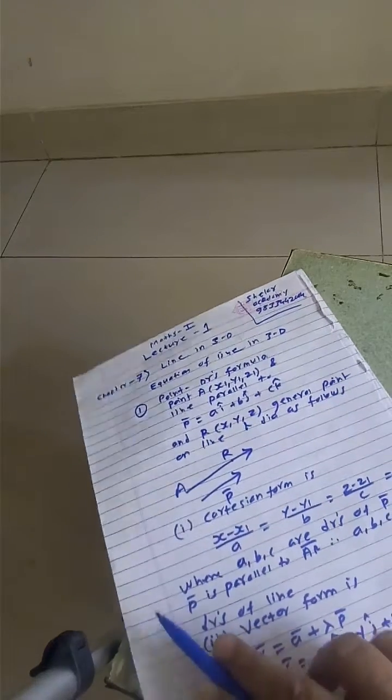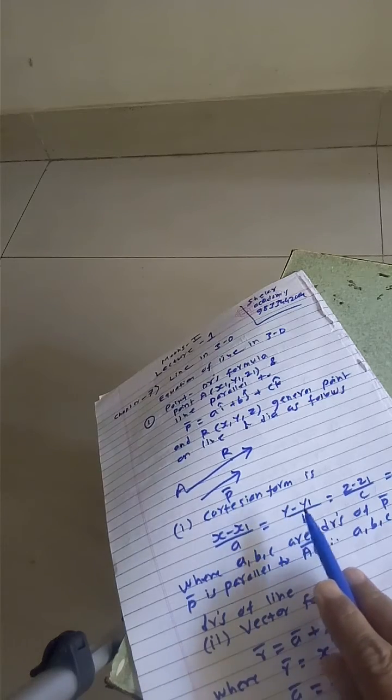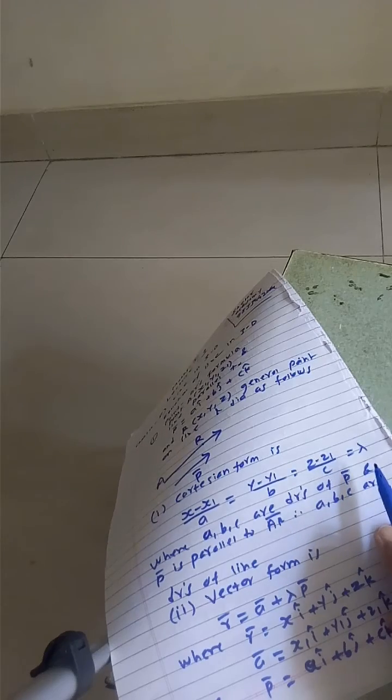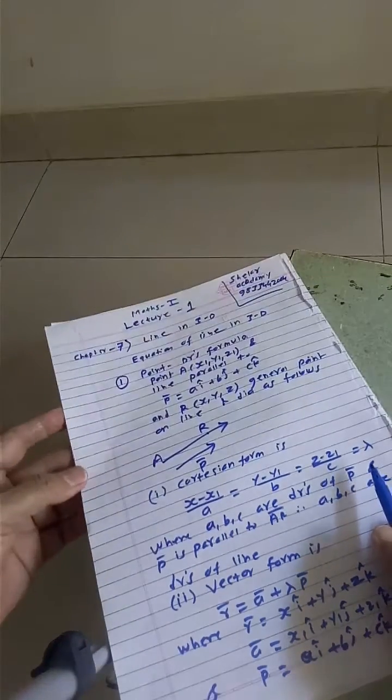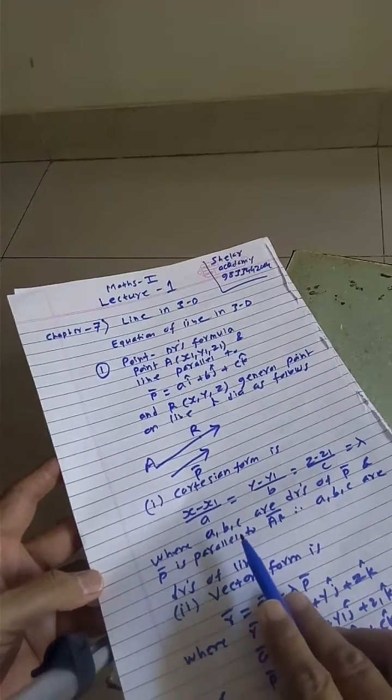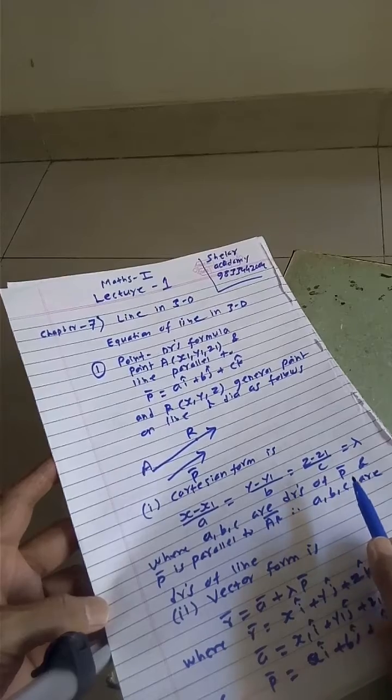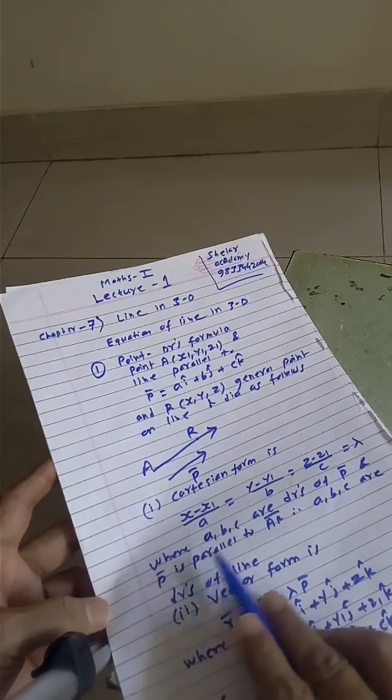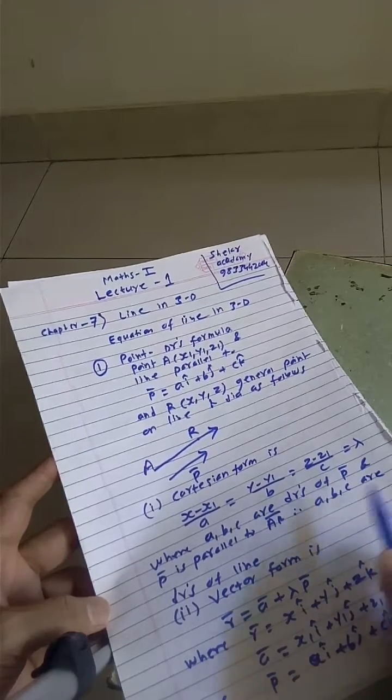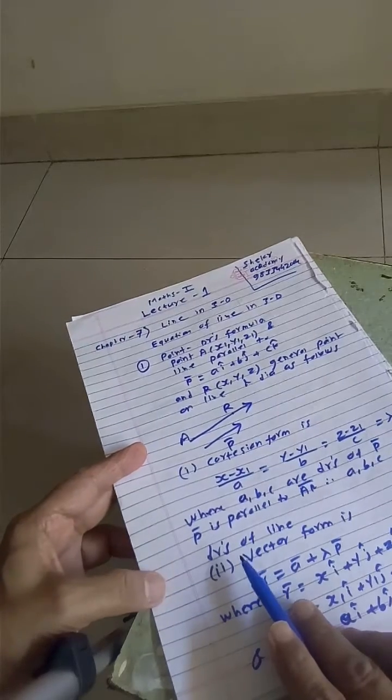Now Cartesian form is (X minus X1) upon A equals (Y minus Y1) upon B equals (Z minus Z1) upon C equals lambda, where lambda is an arbitrary constant and small a, small b, small c are the direction ratios of P vector and P vector is parallel to AR vector. Therefore, A, B, C are the direction ratios of a line.